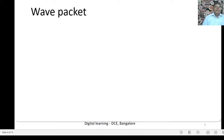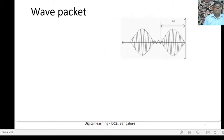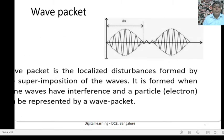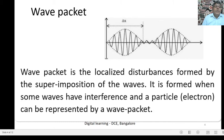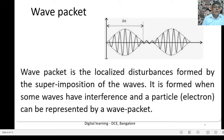What is a Wave Packet? A Wave Packet is the localized disturbance formed by the superimposition of waves. It is formed when some waves have interference, and particles like electrons can be represented by a wave packet.